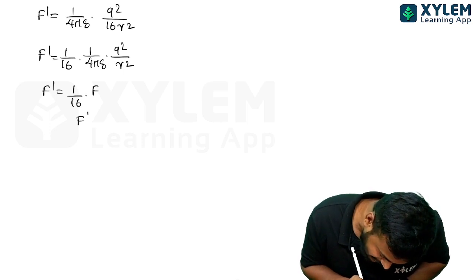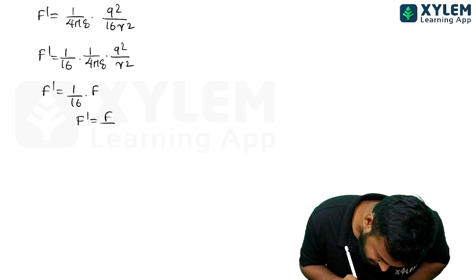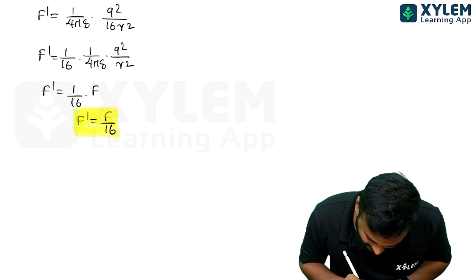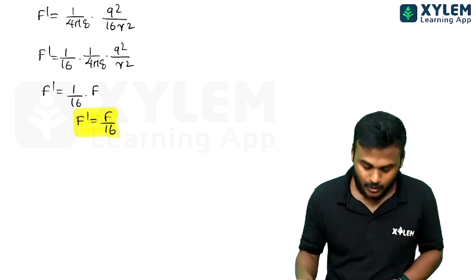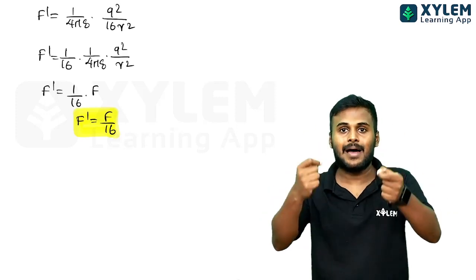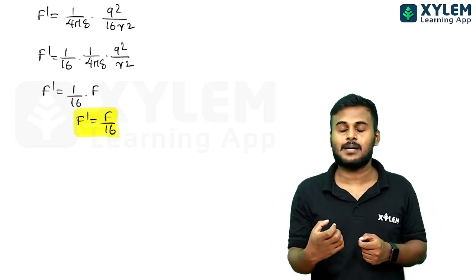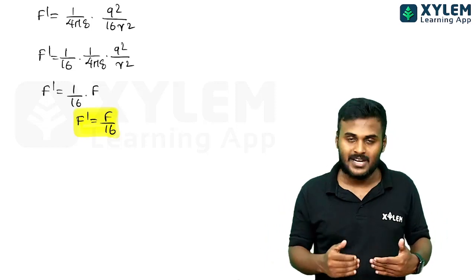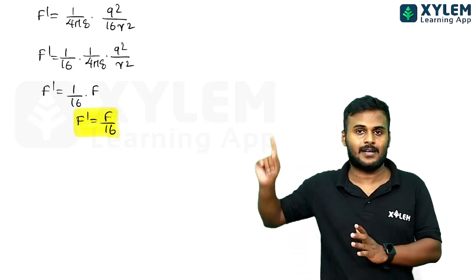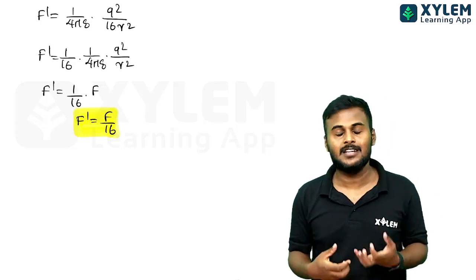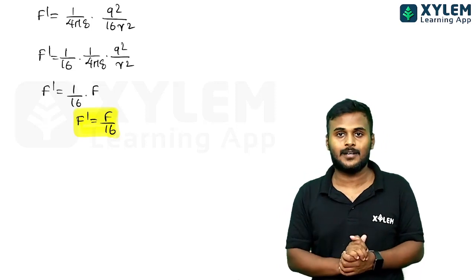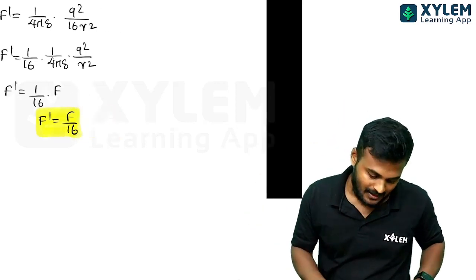So F dash equals (1/16) into F. This is the final equation. The new force, when charges are halved and distance doubled, is F' = F/16. This is an important previous year question.